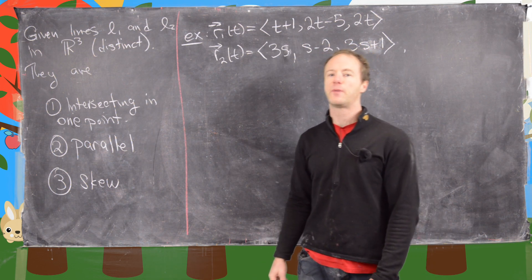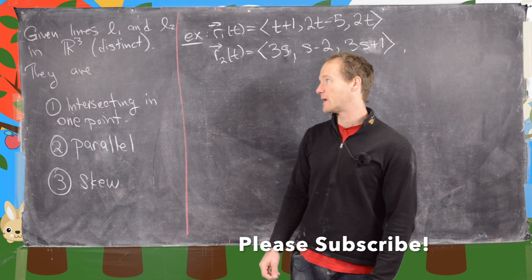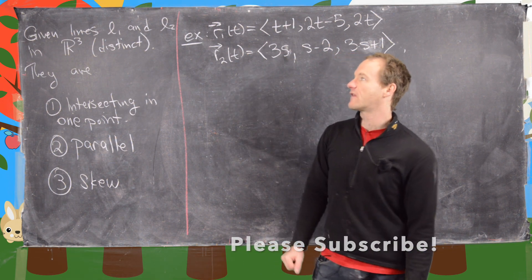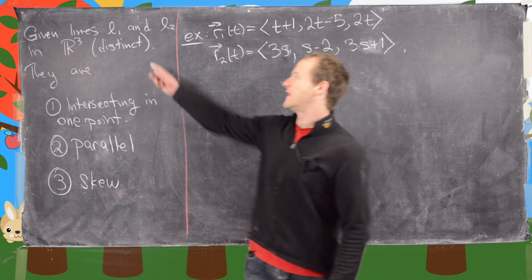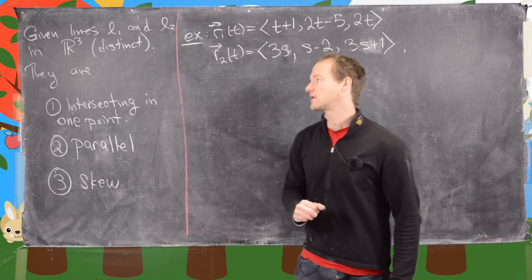In this video we're going to look at the possible interaction of two lines in three dimensional space. So let's suppose we have lines L1 and L2 that are distinct, so they are not the same line. Then we have three possibilities.